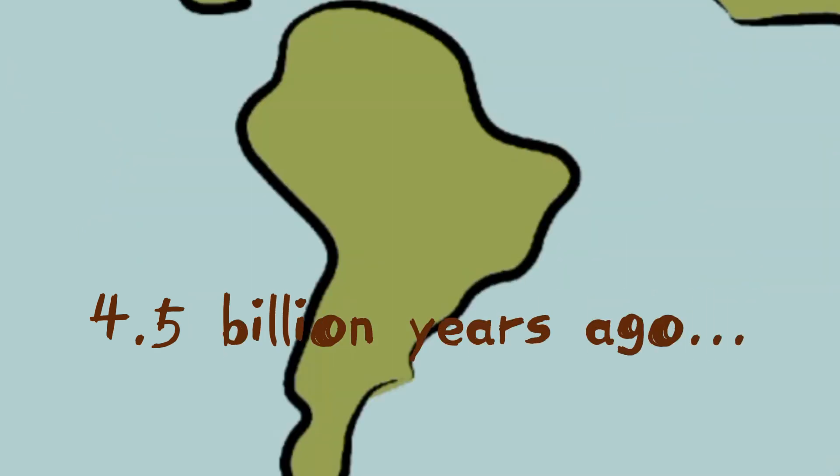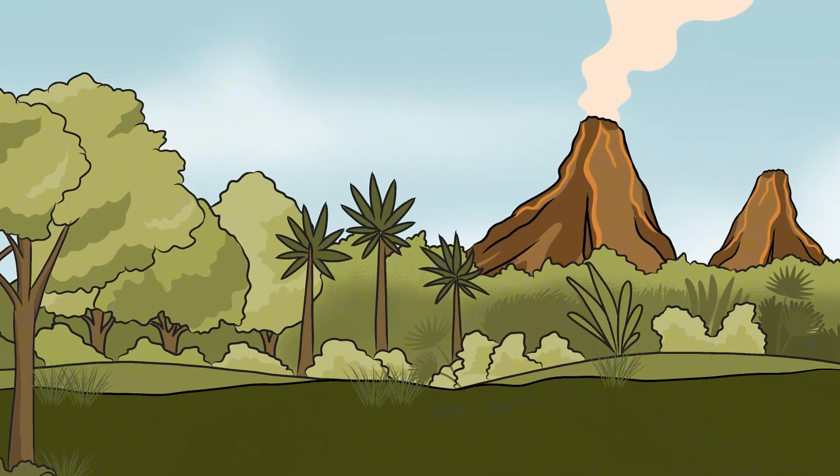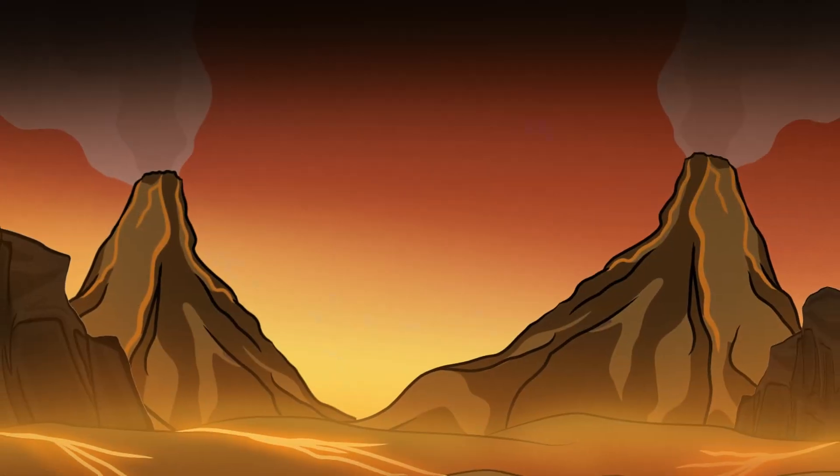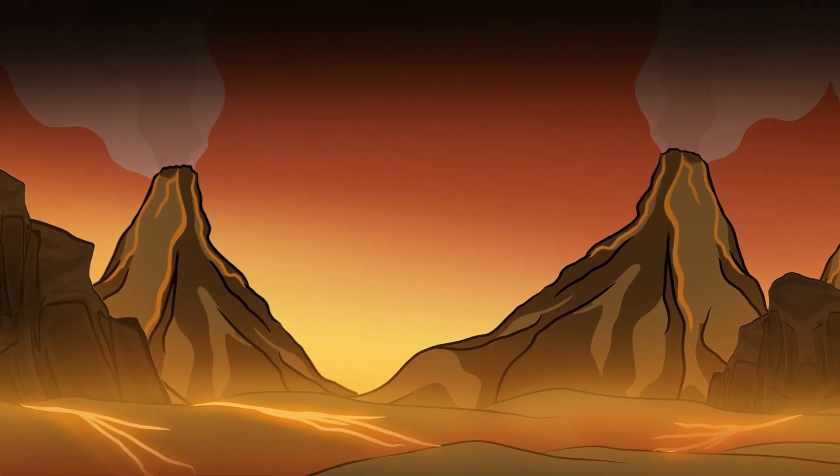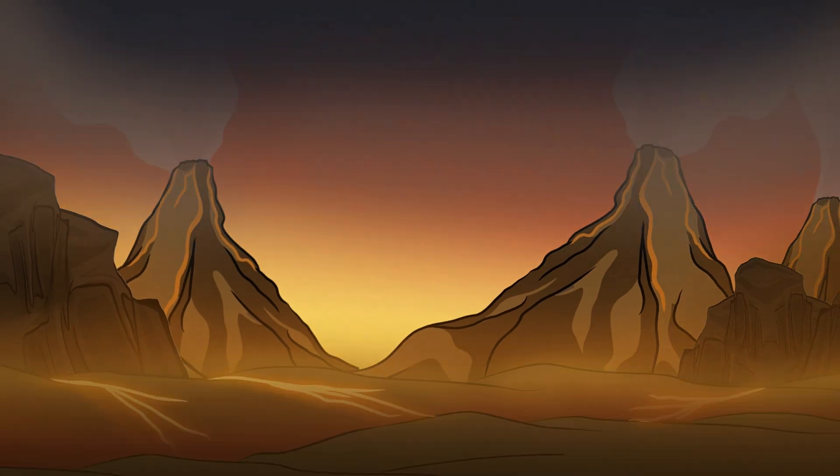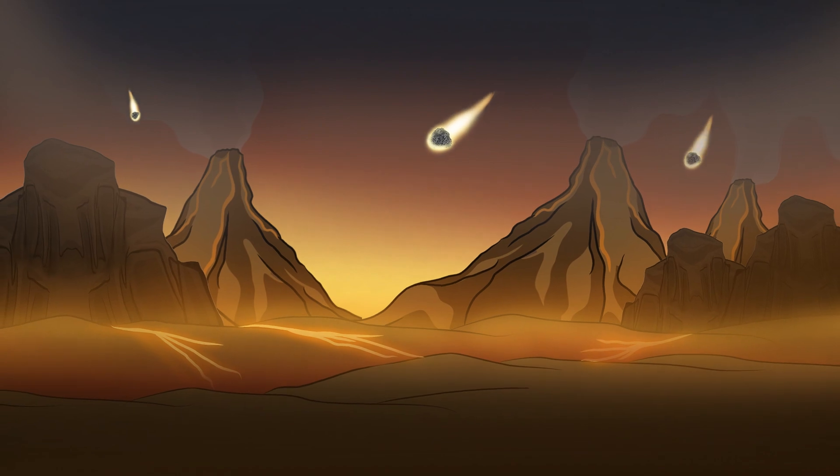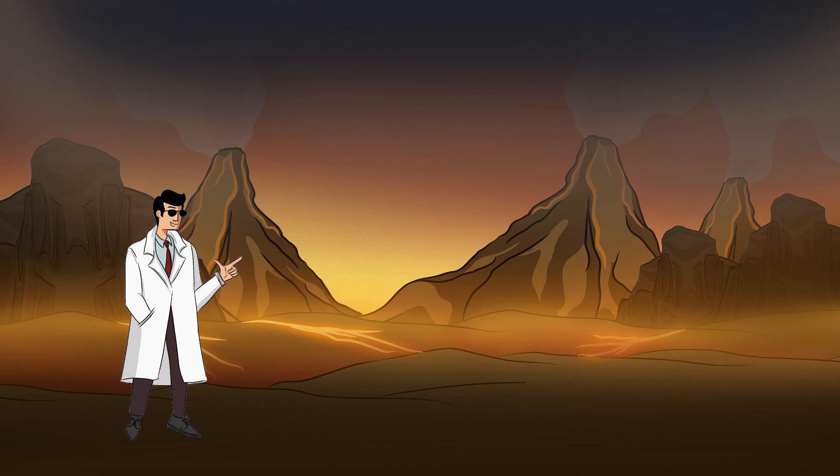4.5 billion years ago, Earth was far from the lush, green planet we know today. Instead, it was a fiery inferno. Molten lava flowed across the surface, toxic gases poisoned the air, and meteors relentlessly showered the land. It was a world where life seemed utterly impossible.